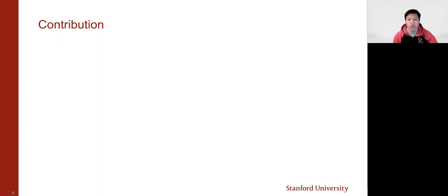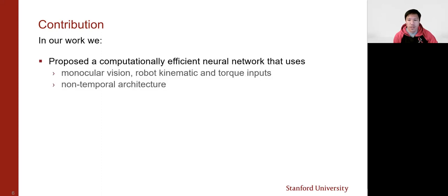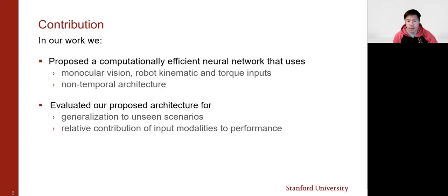In this work, we propose a computationally efficient learning-based method that uses vision and robot kinematics and torque estimates to predict force. And we do this through a network that only considers a single time frame of measurements. We also explore how these methods generalize to unseen scenarios and the relative contribution of each modality to the network's abilities to perform the force estimation.